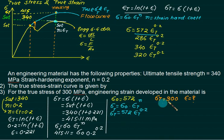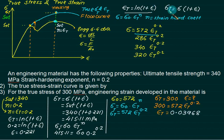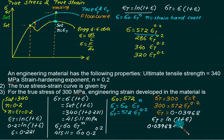The law states that true stress 300 = 572 × epsilon-t^0.2. This power is always constant at 0.2. From this, we solve for epsilon-t. Then using epsilon-t = ln(1 + epsilon), we get epsilon-t ≈ 0.03968. Solving for epsilon gives approximately 40.48 × 10⁻³.